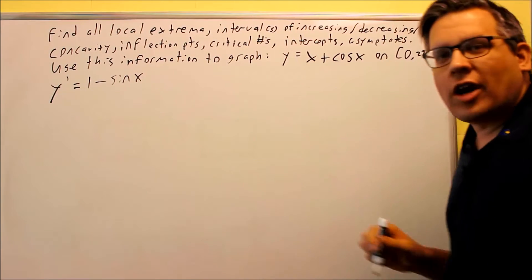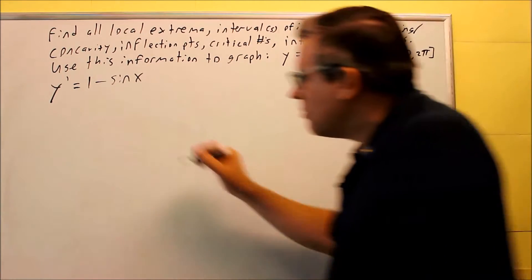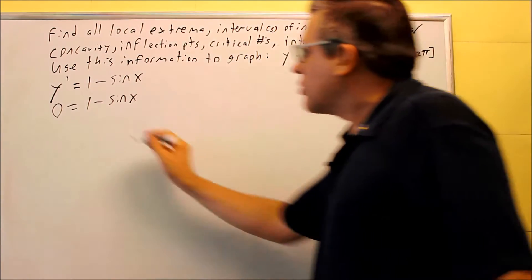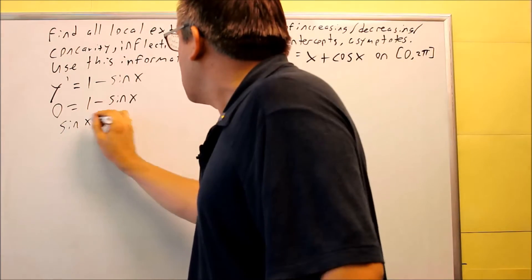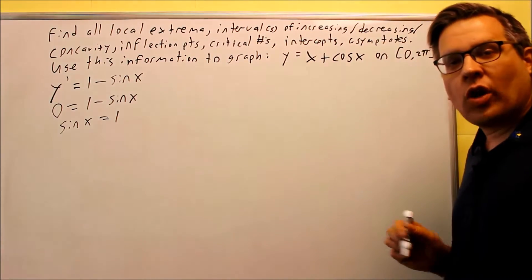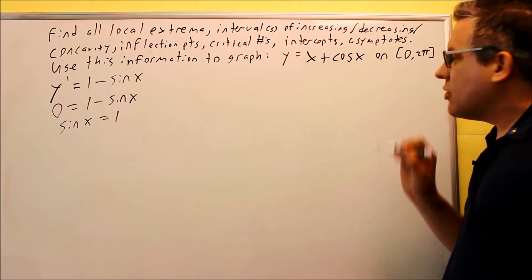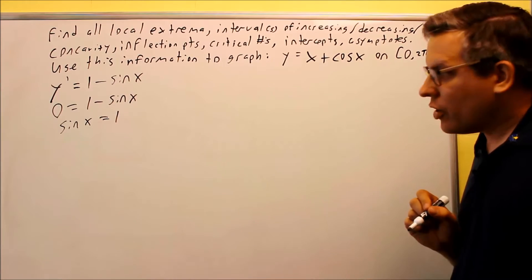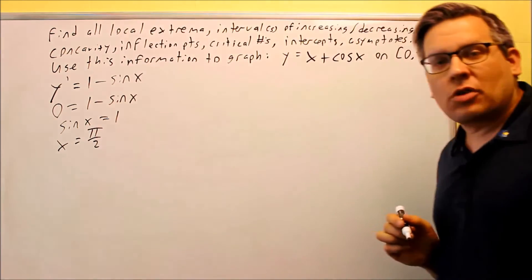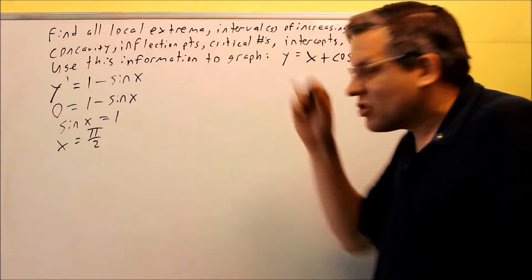That's not going to be undefined anywhere, so to find the critical number we set the first derivative equal to 0. We get 0 equals 1 minus sine x, which gives us sine x equals 1. Looking at the unit circle between 0 and 2 pi, the only angle where that occurs is pi over 2. So pi over 2 is the one and only critical number, since the first derivative is not undefined anywhere.